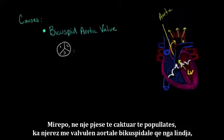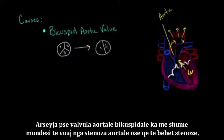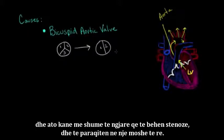A certain portion of the population actually has a congenital bicuspid aortic valve, only having one and two cusps. The reason why a bicuspid aortic valve is more likely to become stenotic is because you have two cusps doing the work of three. These bicuspid valves actually get damaged quicker, can become calcified over time, and are thus more likely to become stenotic and to do so at an earlier age.